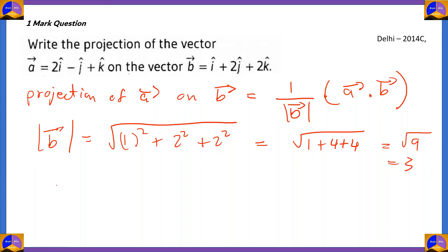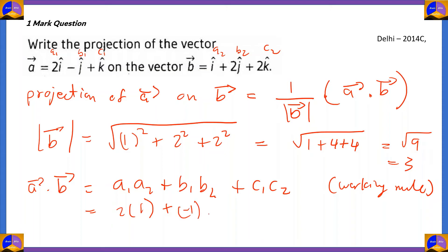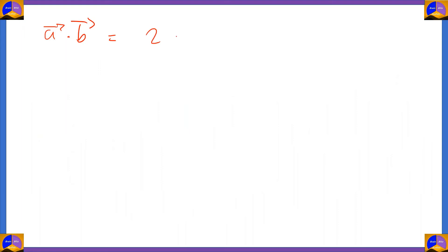Now let's find the dot product a bar · b bar. Using the working rule a1·a2 + b1·b2 + c1·c2, where a1,a2 are x components, b1,b2 are y components, and c1,c2 are z components: a1=2, a2=1; b1=−1, b2=2; c1=1, c2=2. So the dot product = 2×1 + (−1)×2 + 1×2 = 2 − 2 + 2 = 2.